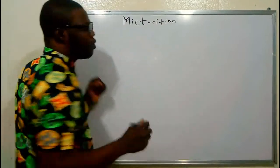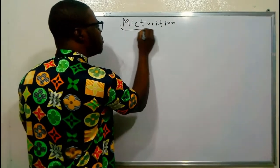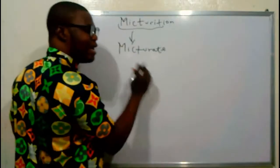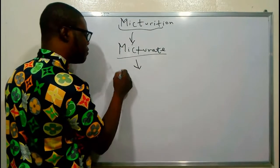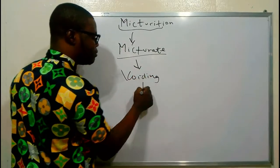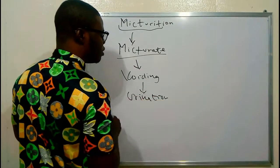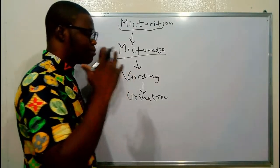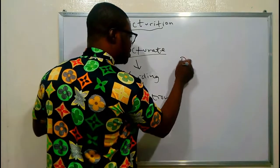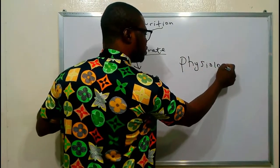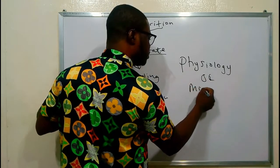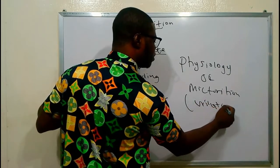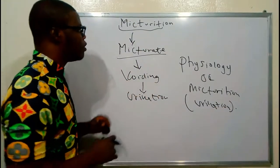The word micturition comes from the word micturate, and micturate means voiding, and voiding means urination. So in this topic we are going to be talking about how we urinate — scientifically, the physiology of micturition, or the physiology of urination.